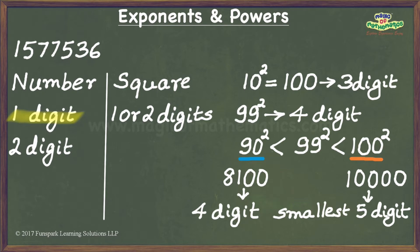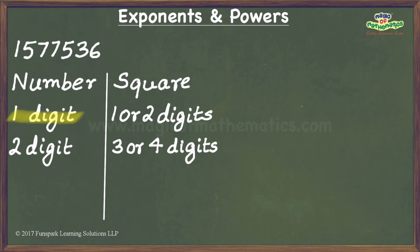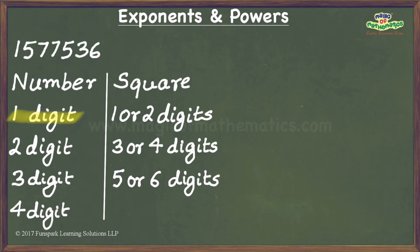So, we have established that the square of a two-digit number has either three or four digits. By a similar logic, we can easily see that the square of a three-digit number will have either five or six digits, that of a four-digit number will have either seven or eight digits, and so on.